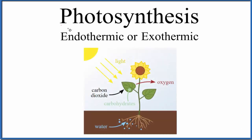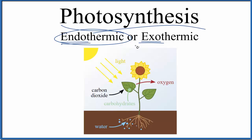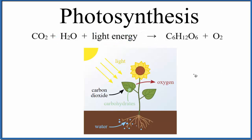The question is whether photosynthesis is endothermic or exothermic, and the short answer is that photosynthesis is an endothermic reaction. In photosynthesis, plants take in carbon dioxide and water and use light energy to make glucose and oxygen. The light energy coming from the Sun is absorbed to make this glucose.